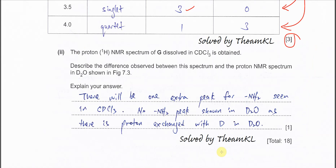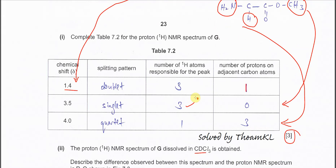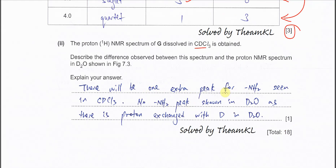Part two: for compound G dissolved in CDCl3 instead of D2O, the NH2 peak will now appear — there will be one extra peak for NH2. In D2O, no NH2 peak is shown because it undergoes proton exchange with D in D2O, so the H is replaced by D and gives no NMR signal.